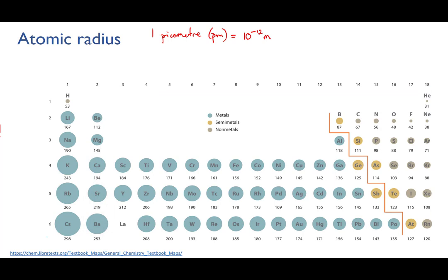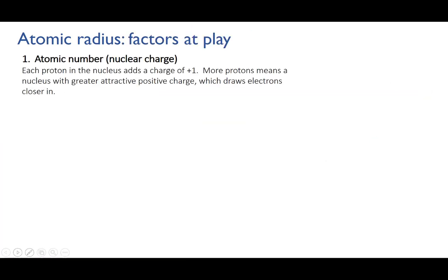Well, let's think about the factors at play. There are three main factors to consider. The first is how many protons are in the nucleus of the atom, or in other words, the atomic number. This determines how much positive charge the nucleus has, and because it is electrostatic attractions between the positive nucleus and the negative electrons that hold the atom together.